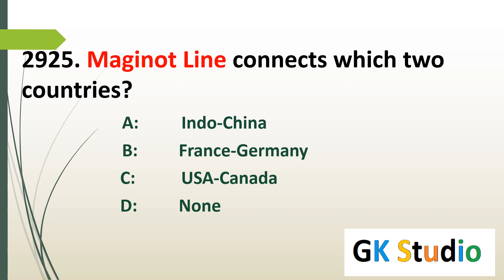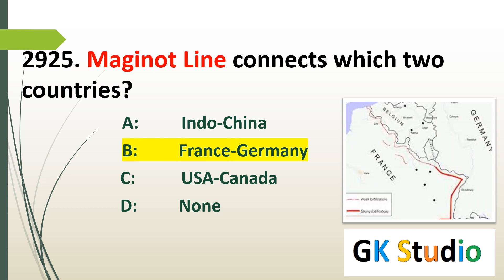The Maginot Line connects which two countries? The Maginot Line connects France and Germany. Thank you very much.